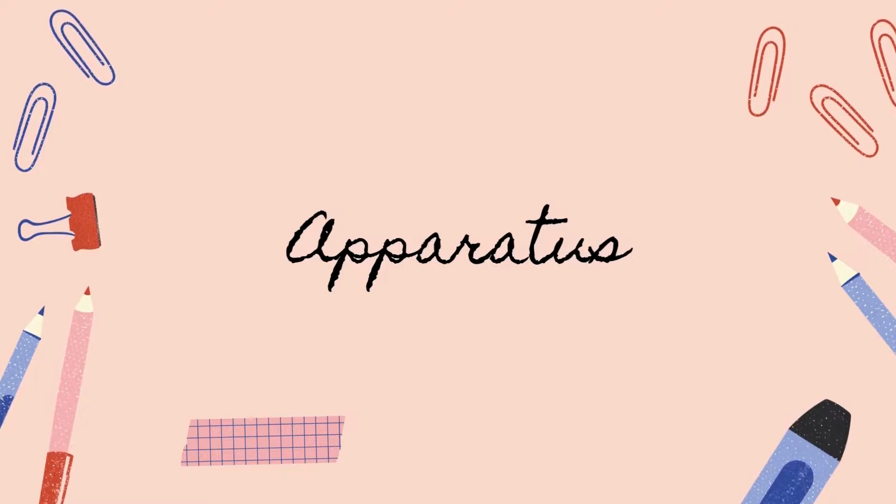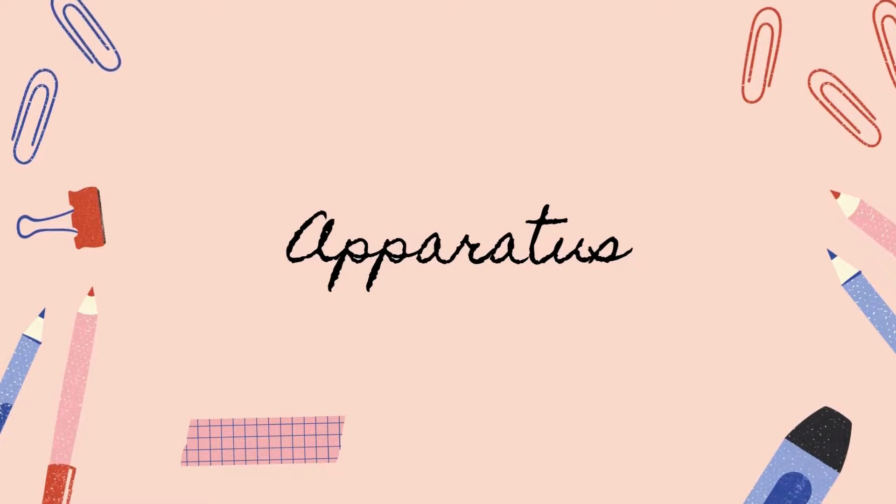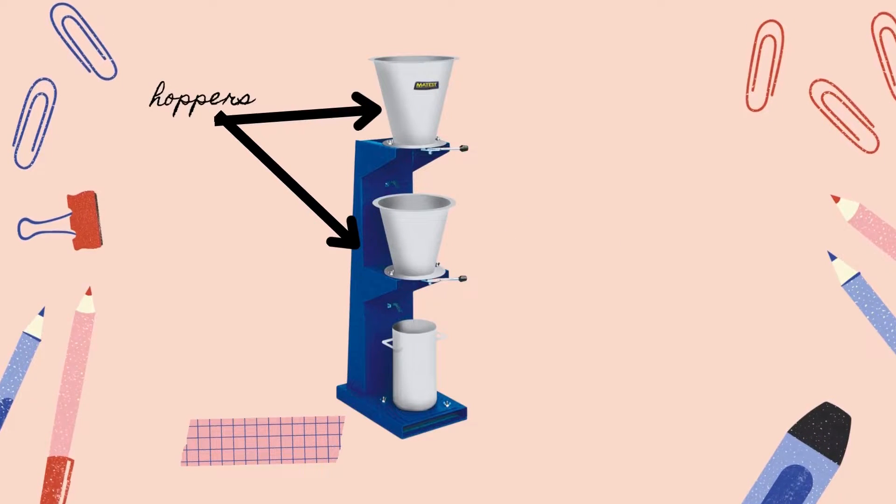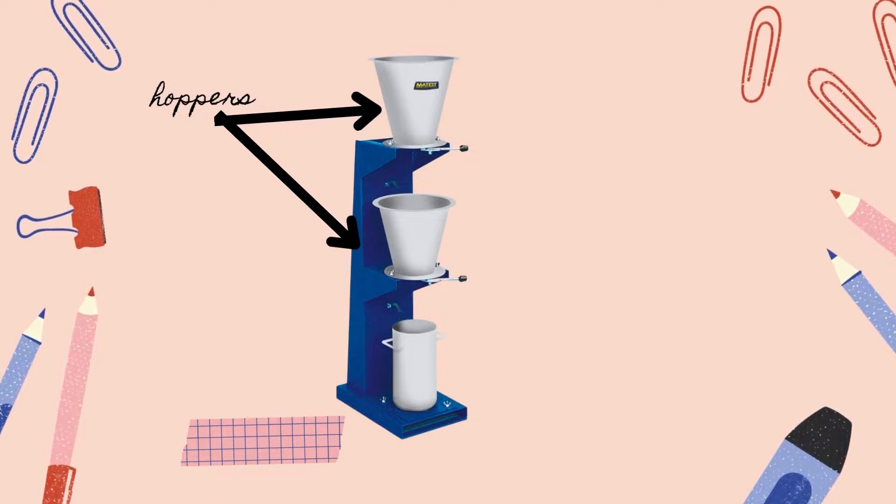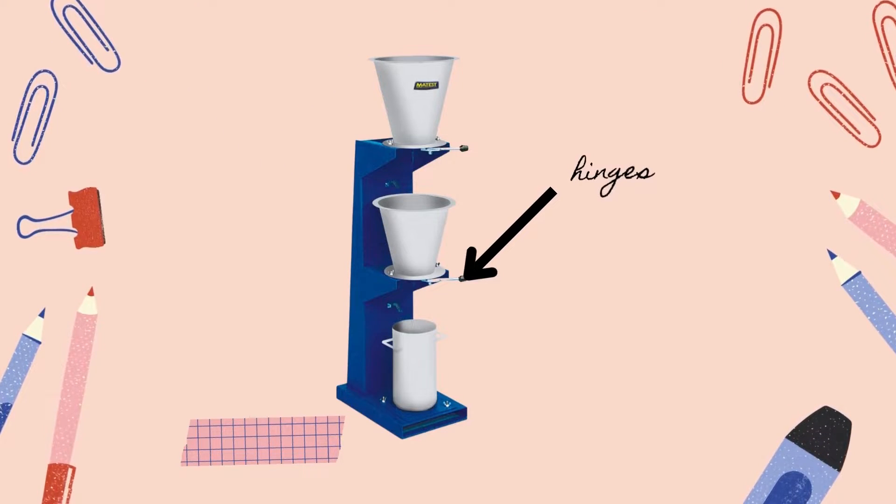Let's now look at the apparatus we'll use. The apparatus for compaction factor test comprised of two cone-shaped hoppers made up of brass or bronze. Their lower ends are fixed with tight hinge openings ideal for quick release and catch.